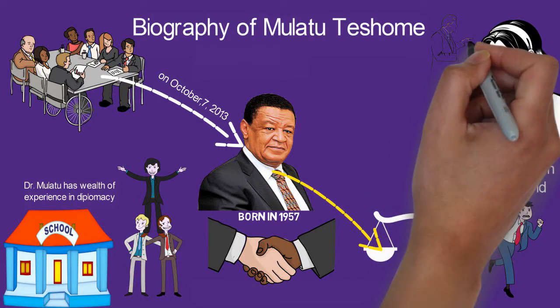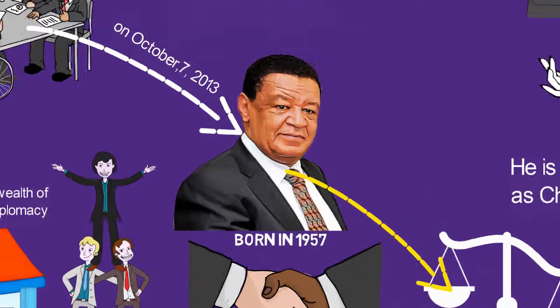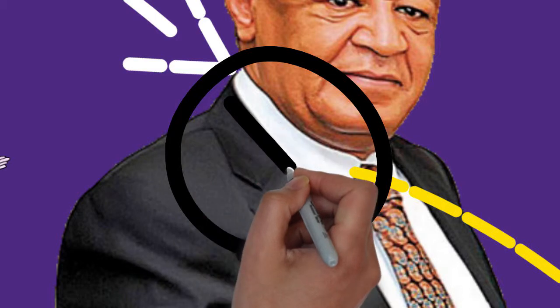Mulatu became the most outspoken Ethiopian head of state, always willing to speak openly. One can say his time as a diplomat perhaps influenced him.